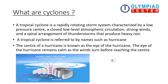What are cyclones? A tropical cyclone is a rapidly rotating storm system characterized by a low pressure center, a close low-level atmospheric circulation, strong winds, and a spiral arrangement of thunderstorms that produce heavy rain. A tropical cyclone is referred to by names such as the hurricane.